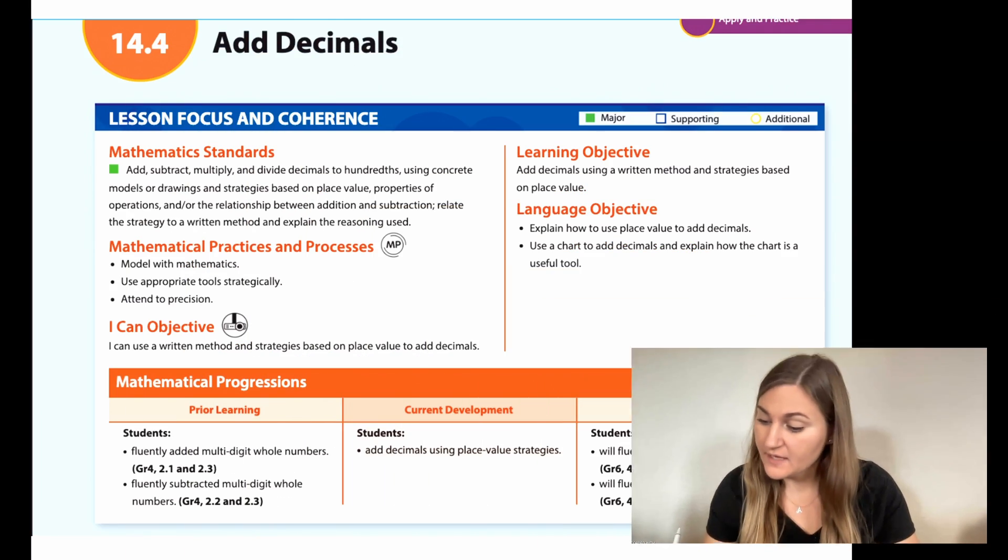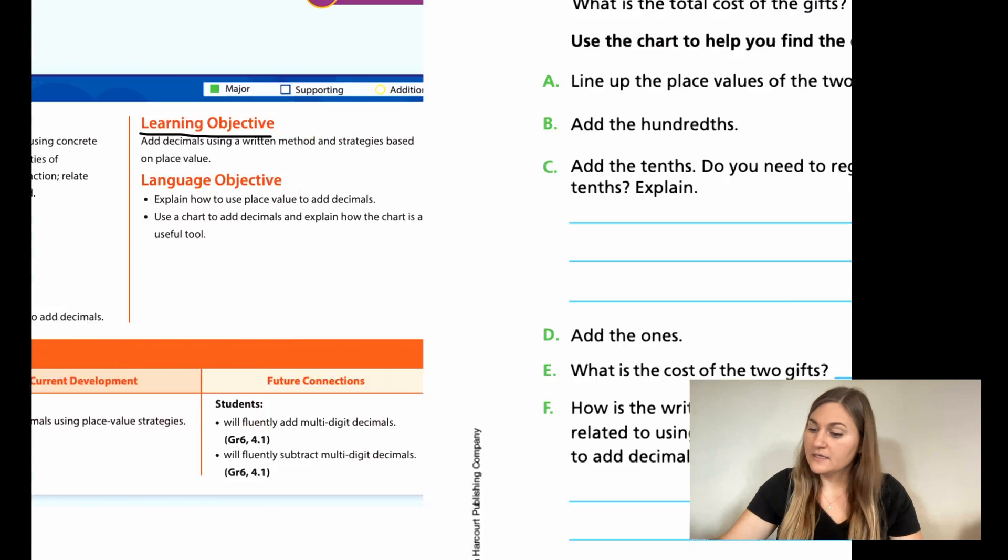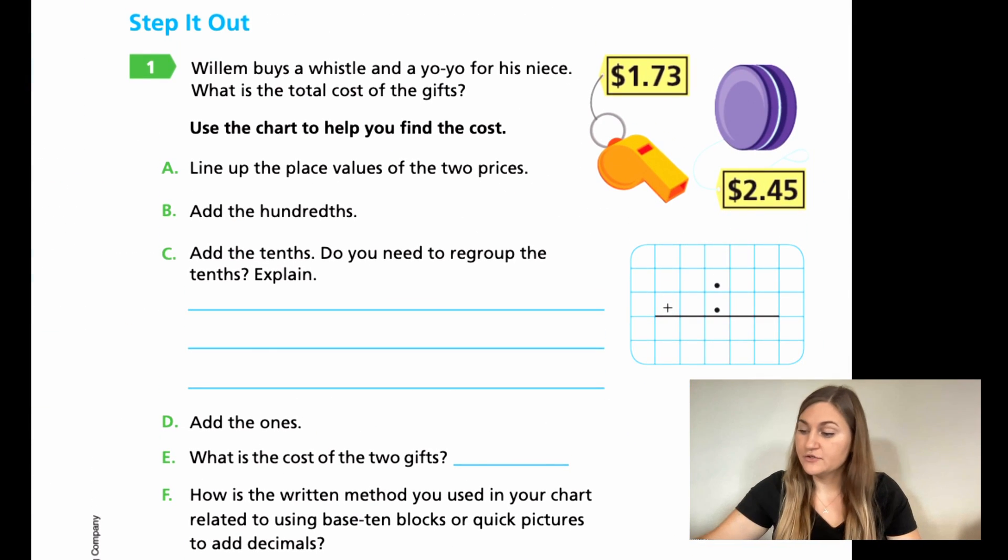Hi, I'm Natalie Rhodes and this is Into Maths Module 14, Lesson 4. I'm going to start off by going over the I Can objective. It says I can use a written method and strategies based on place value to add decimals. We're on page 351.